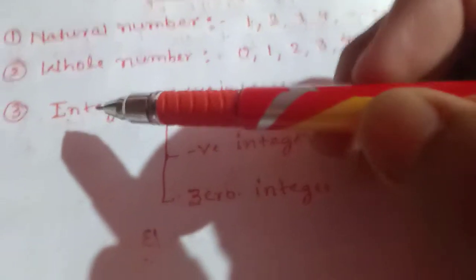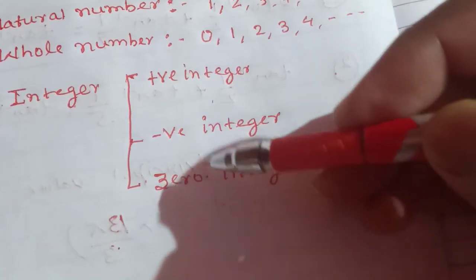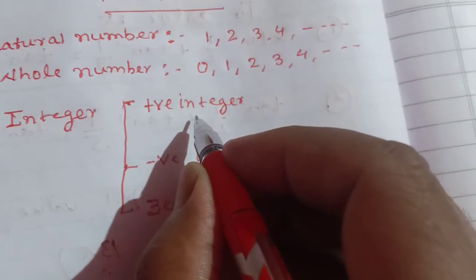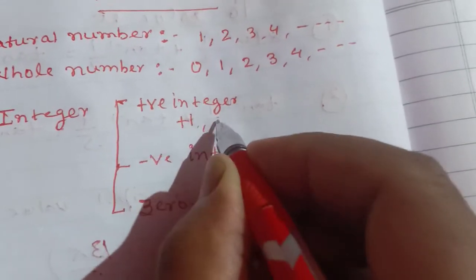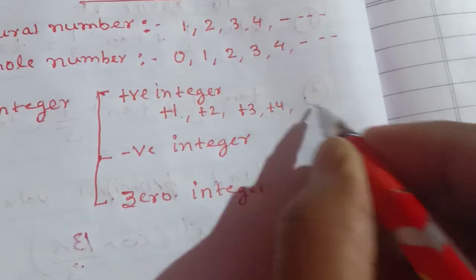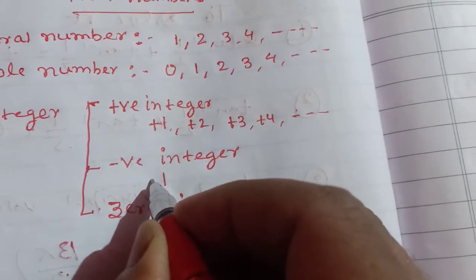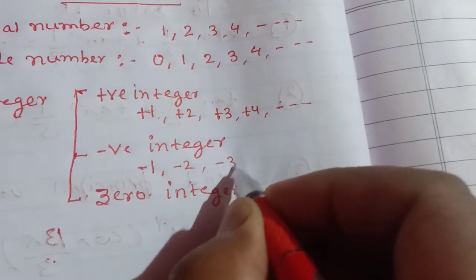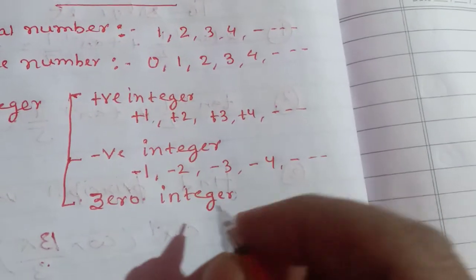Integer: there are three types of integers — positive integer, negative integer, and zero. Positive integer: the natural numbers with a positive sign are called positive integers. Negative integer: the integers with a negative sign are called negative integers, for example -1, -2, -3, -4, and so on.